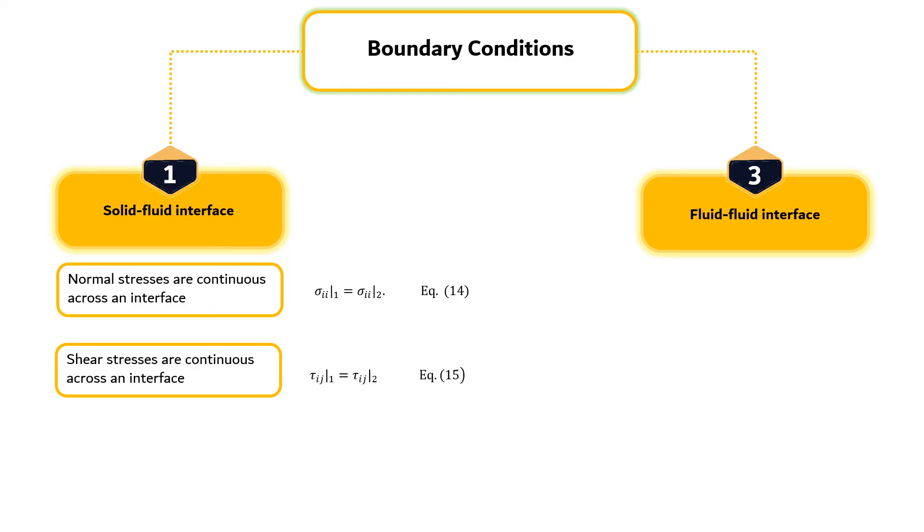At the solid-fluid boundary, the non-slip condition is almost always used, which expresses that the fluid velocity tangent to the impermeable solid surface equals the velocity of the solid surface as shown in equation 16.